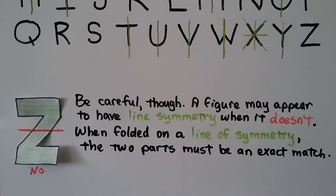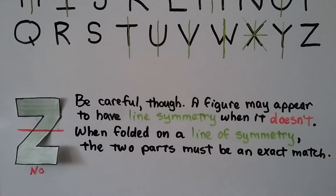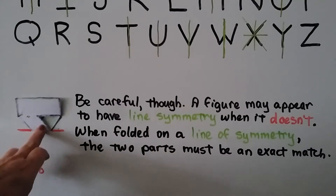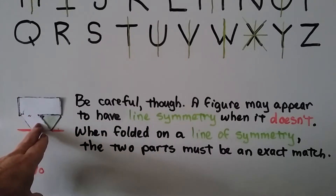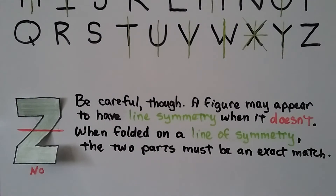Be careful — a figure may appear to have line symmetry when it doesn't. You might think that the letter Z has line symmetry, but when folded on a line of symmetry, the two parts must be an exact match. Look what happens if I fold this — that's not an exact match, you can see the part sticking out. Folding is the best way to tell if a shape truly has line symmetry.